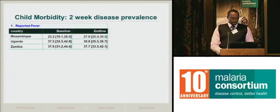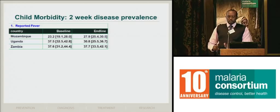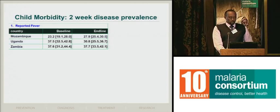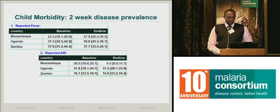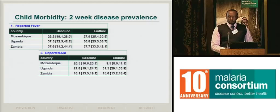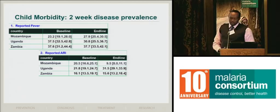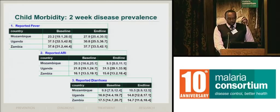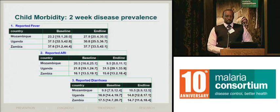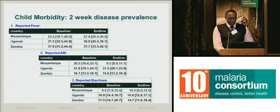The results from the surveys: looking at reported fever, there were no changes between baseline and endline, as expected. This was the same for reported acute respiratory infection. ARI was a proxy indicator using cough — we asked if the child had a cough combined with fast, rapid breathing, as a proxy for acute respiratory infection. Reported diarrhea was also similar from baseline to endline.